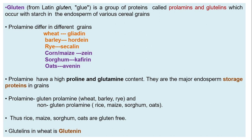Prolamins differ in different grains. In wheat, prolamin is known as gliadin. In the case of barley, it is hordein. In the case of rye, it is secalin. In the case of corn, it is zein. In the case of sorghum, it is kafirin, and in oats it is avenin.